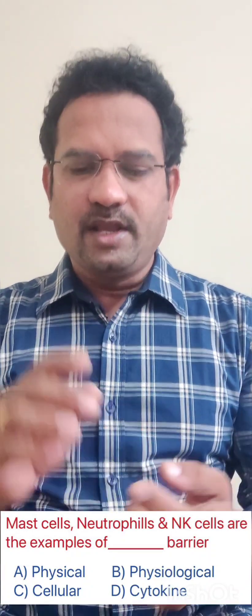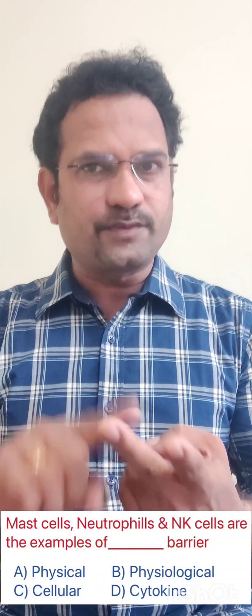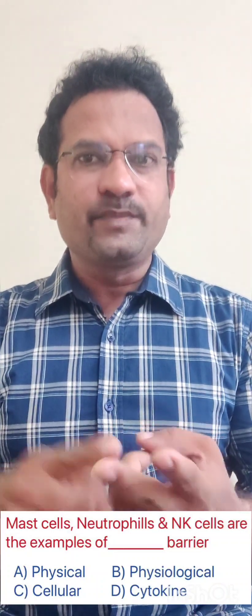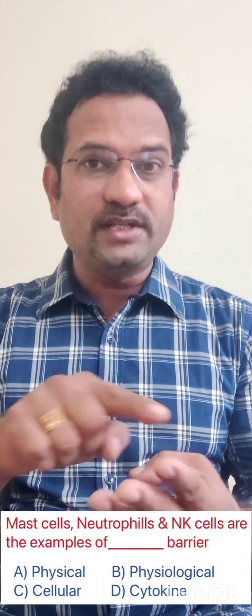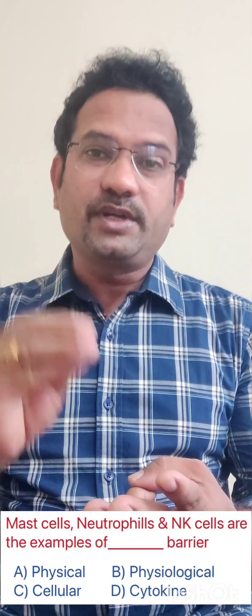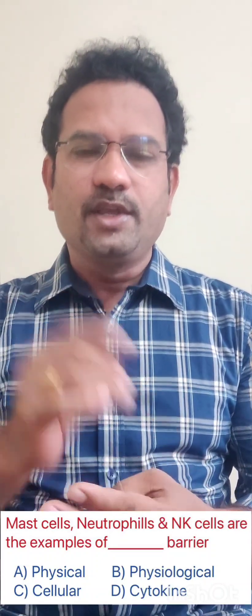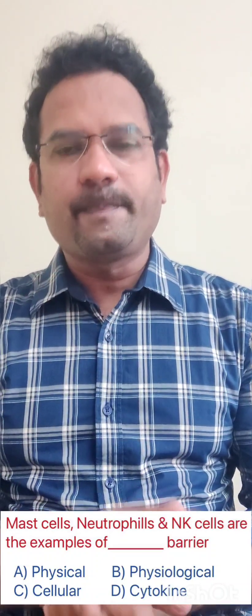The third option is cellular barrier. Mast cells, neutrophils, white blood cells, and NK natural killer cells are all cells which give us immunity. So they are considered cellular immunity. Therefore, option C is the right answer.